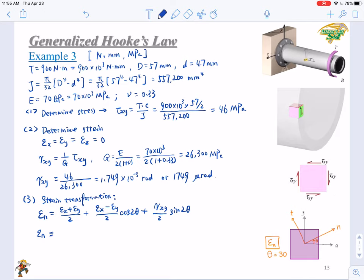So epsilon X and epsilon Y are both 0. So here we get 0 plus 0. You have only one component in this equation, plus 1.749 over two times sine 60 degrees. Since the theta equals 30 degrees. So then you will get the result. This will be 757 microstrain. So this is the expected reading, expected reading of the strain gauge that has been attached to the surface, indicated here.